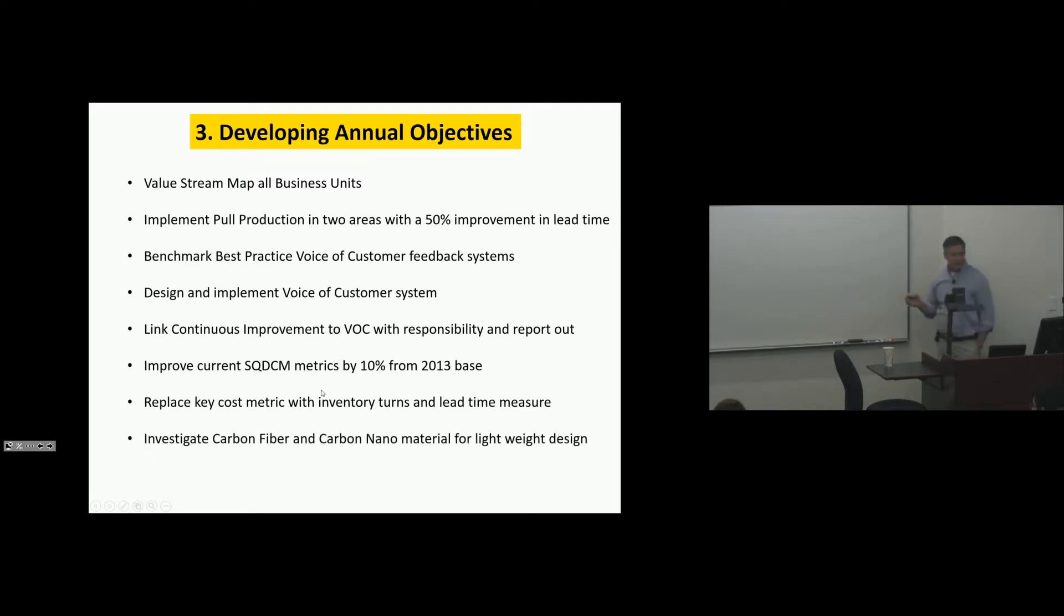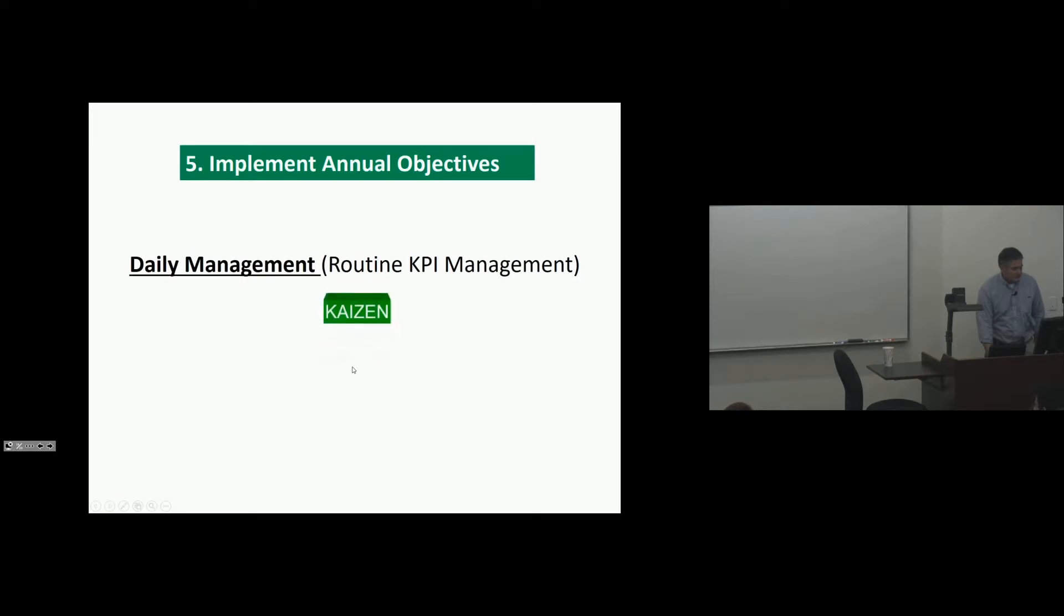Investigate carbon fiber and carbon nanomaterials for lightweight design. These are airplane engines, so they're always trying to save a pound. So they should look at new technologies and see if there's an opportunity to design a part that lightens the weight of the engine. Implement design improvements to aid assembly throughput and quality. Those are our annual objectives. Then Kaizen implement.